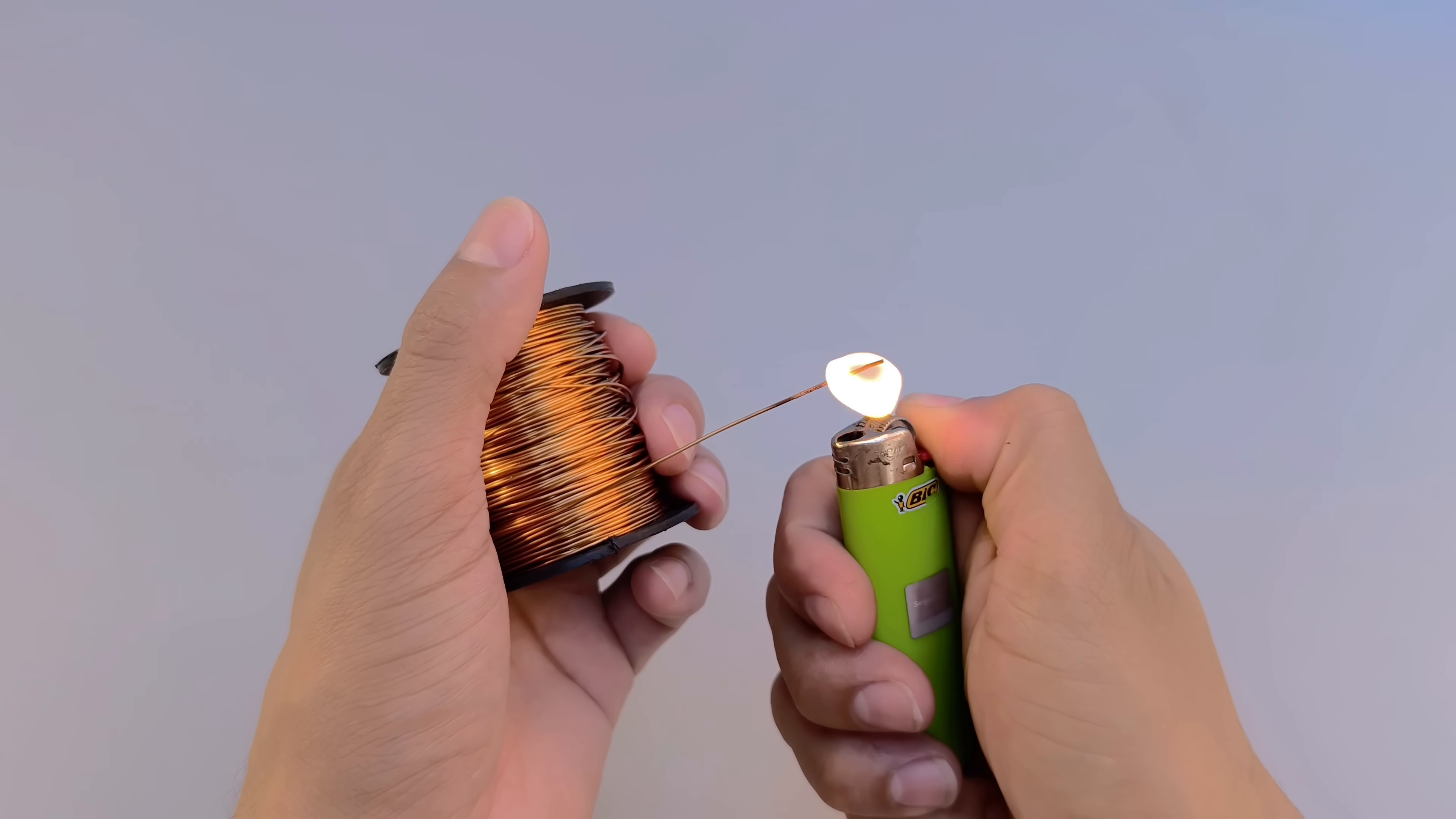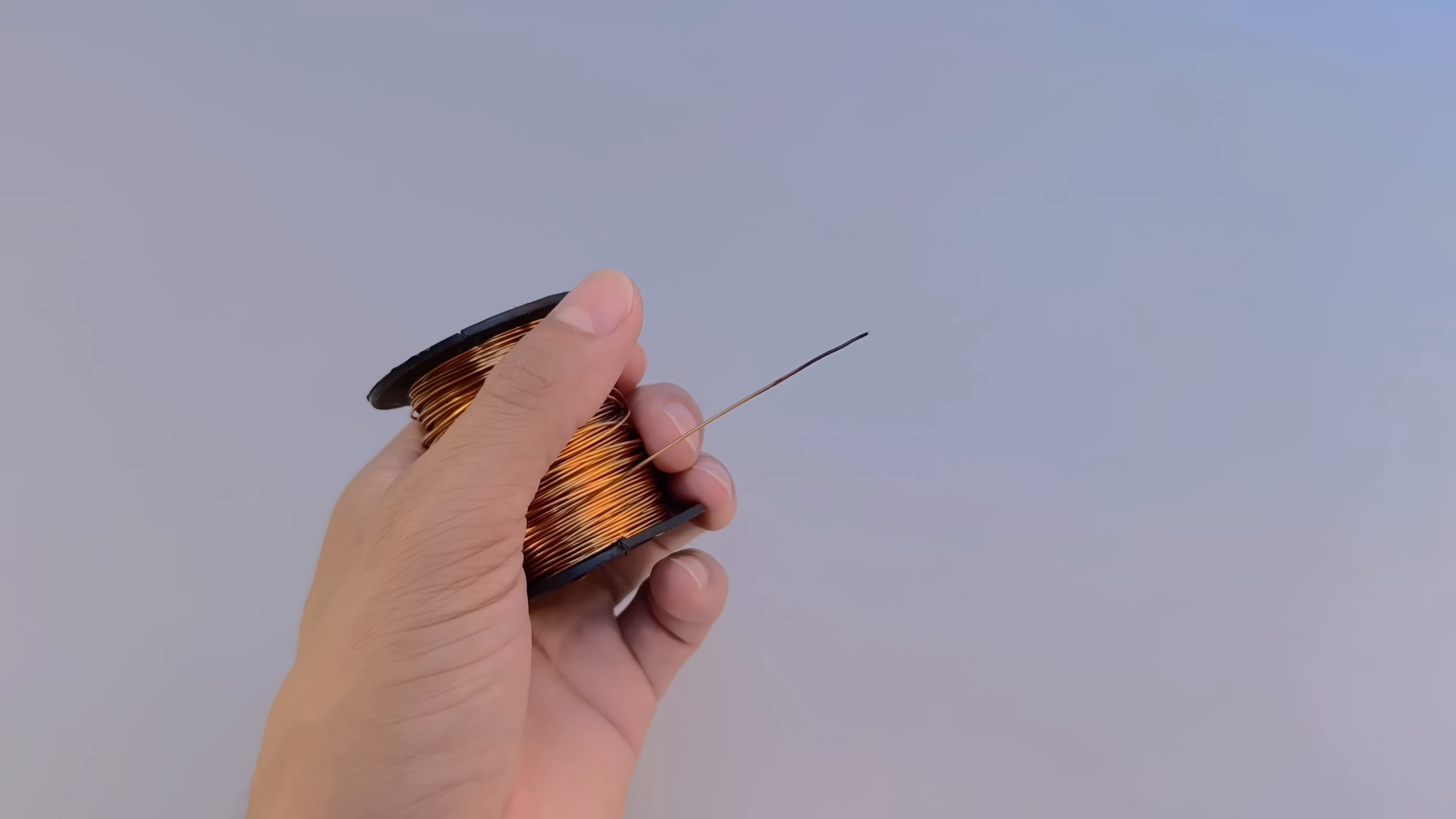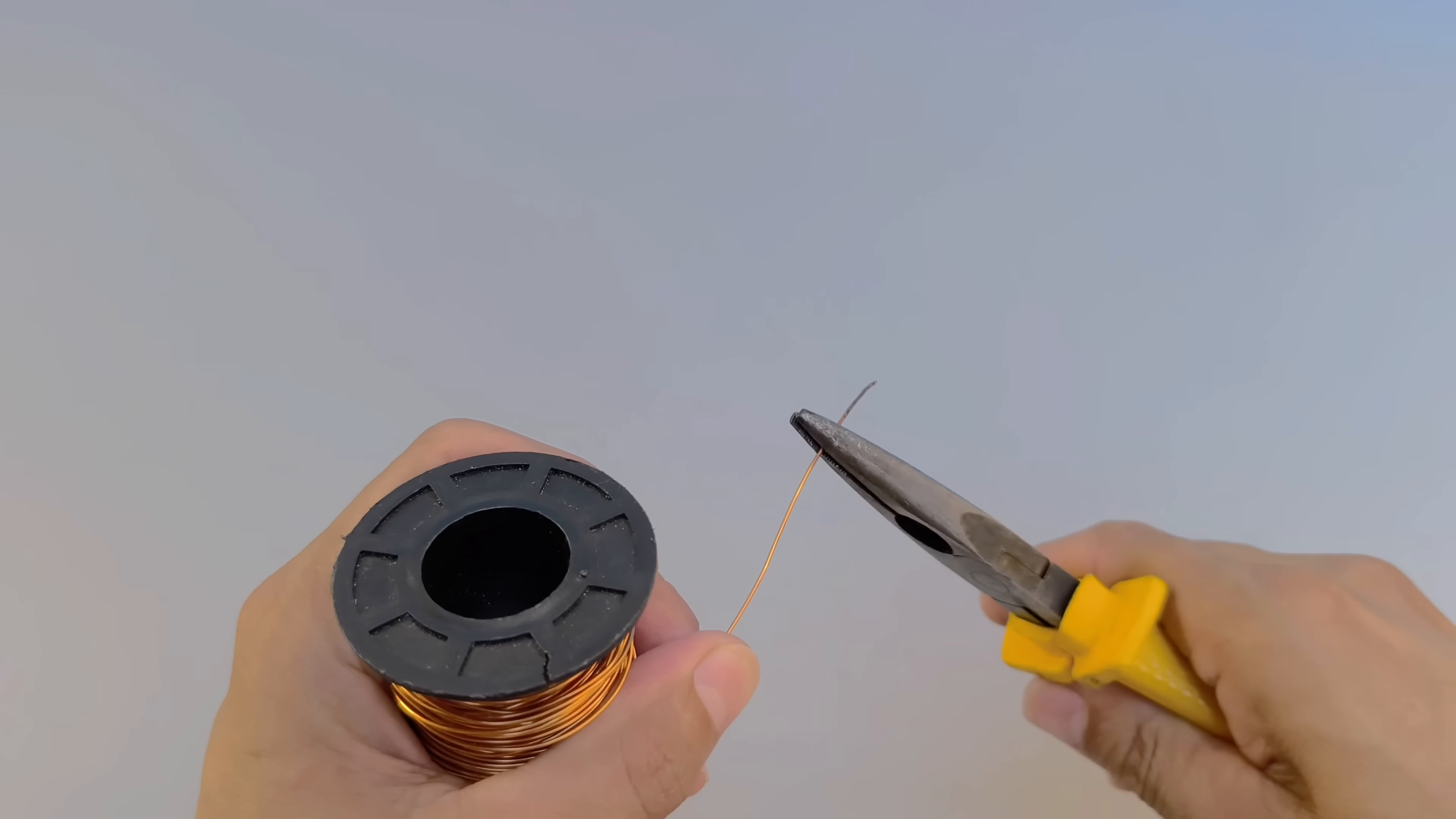For this project, about a meter and a half of wire will be enough. The trick here is to remove the protective enamel from the ends of the wire using heat, which allows electrical conduction at the connection points.